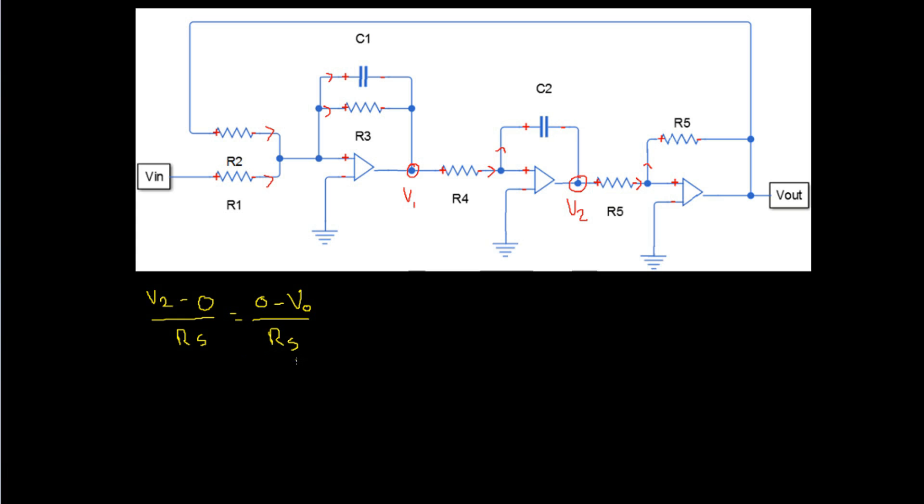As the R5s are common to both sides, we can simply cancel those or in other words we multiply through by R5 which gives us V2 equals negative VO. So we have our first equation.